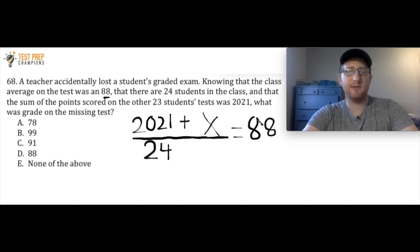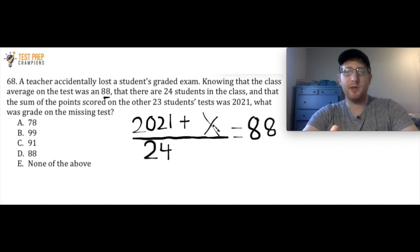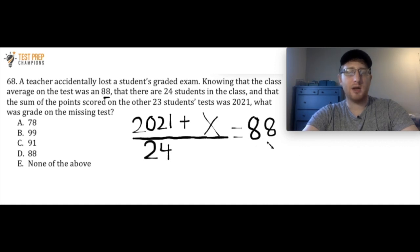So to recap: we're setting up (2021 + x) / 24 = 88. We want to get x by itself. To do that, since everything is divided by 24, I'll multiply both sides of the equation by 24. The 24s cancel on the left side, and on the right side I have to multiply 88 by 24 as well. Whatever I do to one side, I must do to the other.